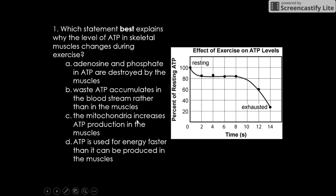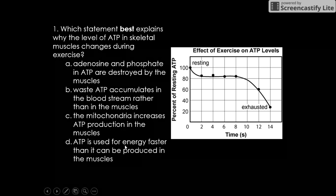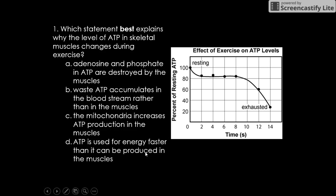C, the mitochondria increases ATP production in the muscles? We know that ATP is not increasing because the graph shows it decreasing. D, ATP is used for energy faster than it can be produced. So if we're using something faster than we're producing it, it's going to go down. That is our answer.